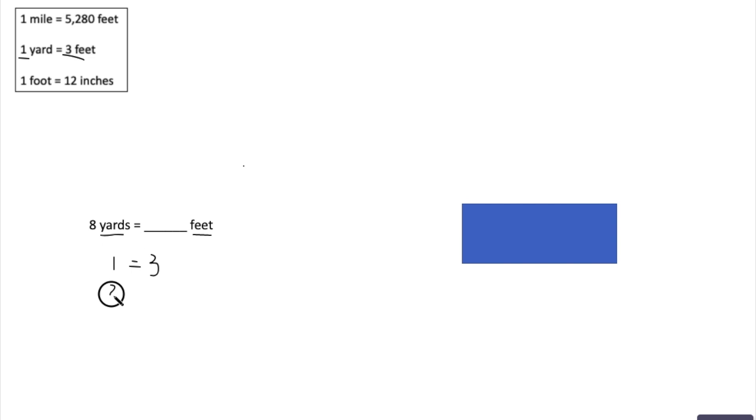So then if one yard equals three, then two yards would equal, well, what's three plus three? Six. So then three yards would be plus another three feet. What's six plus three? Nine. Four yards would be another plus three feet. What's nine plus three? Twelve.